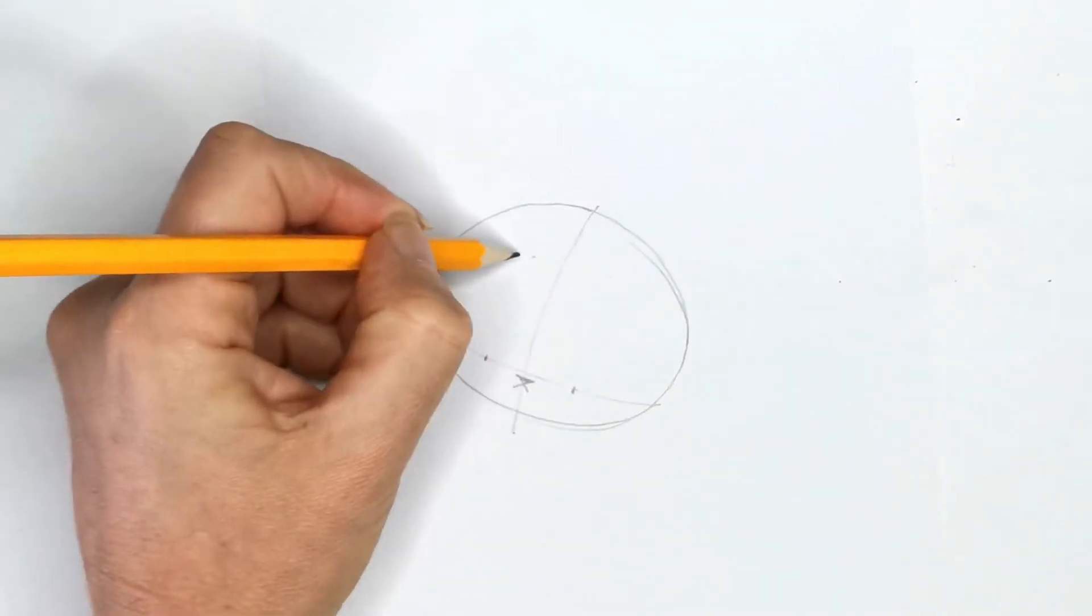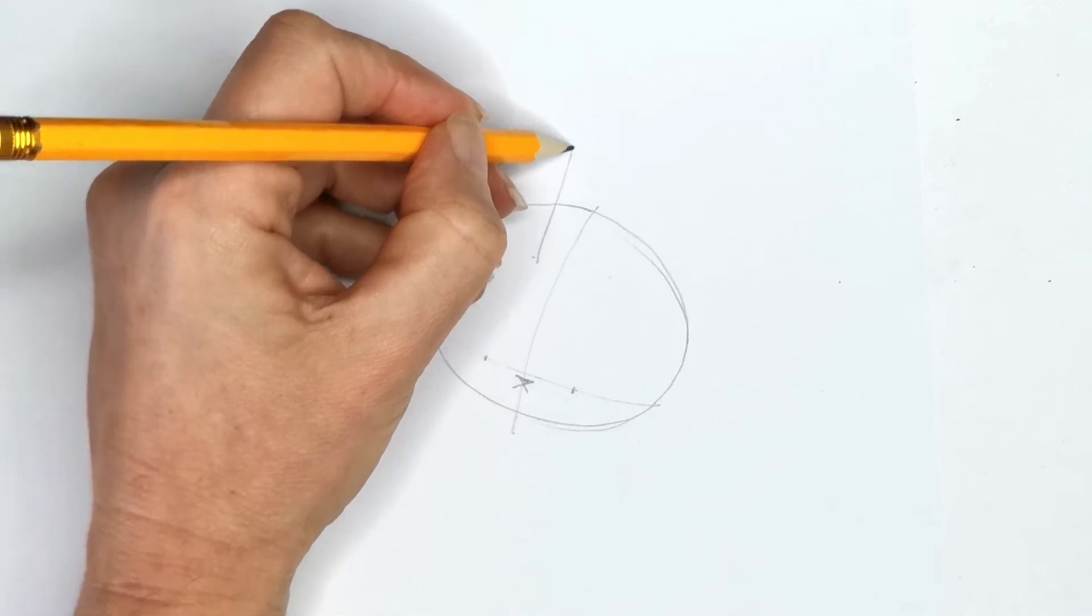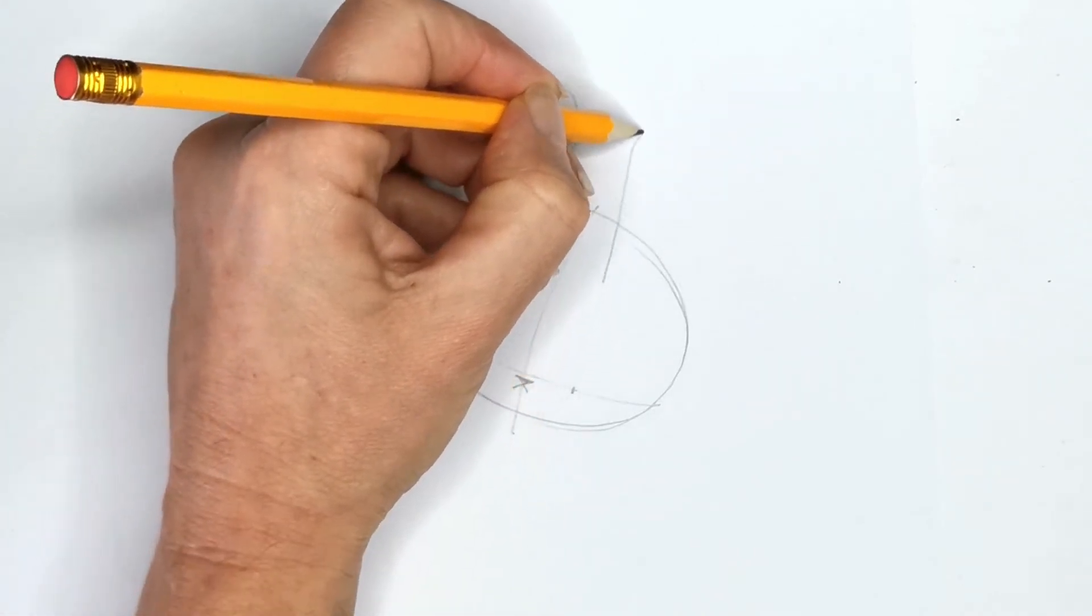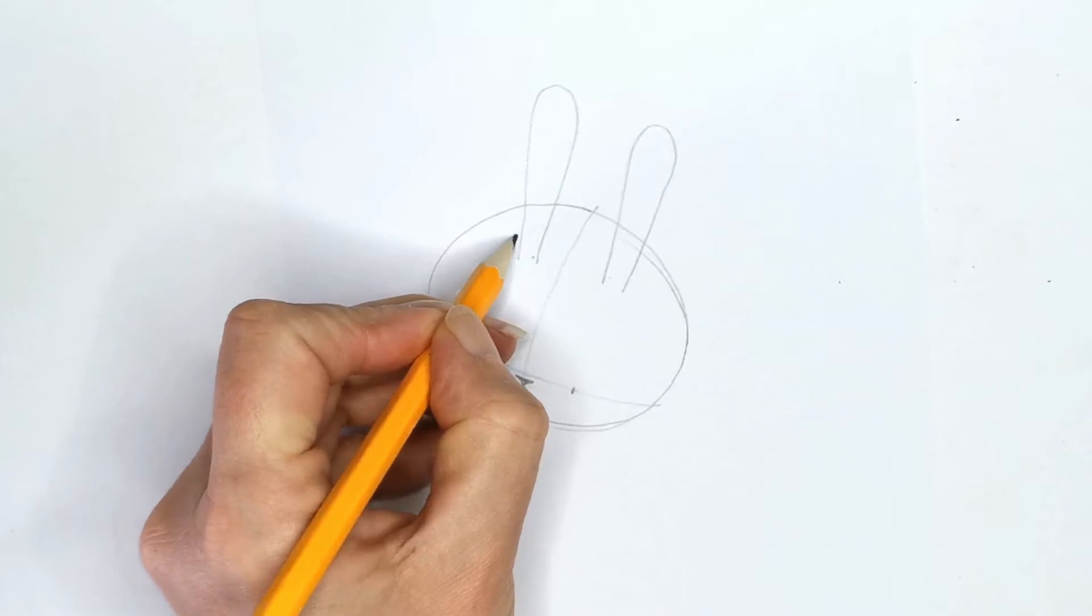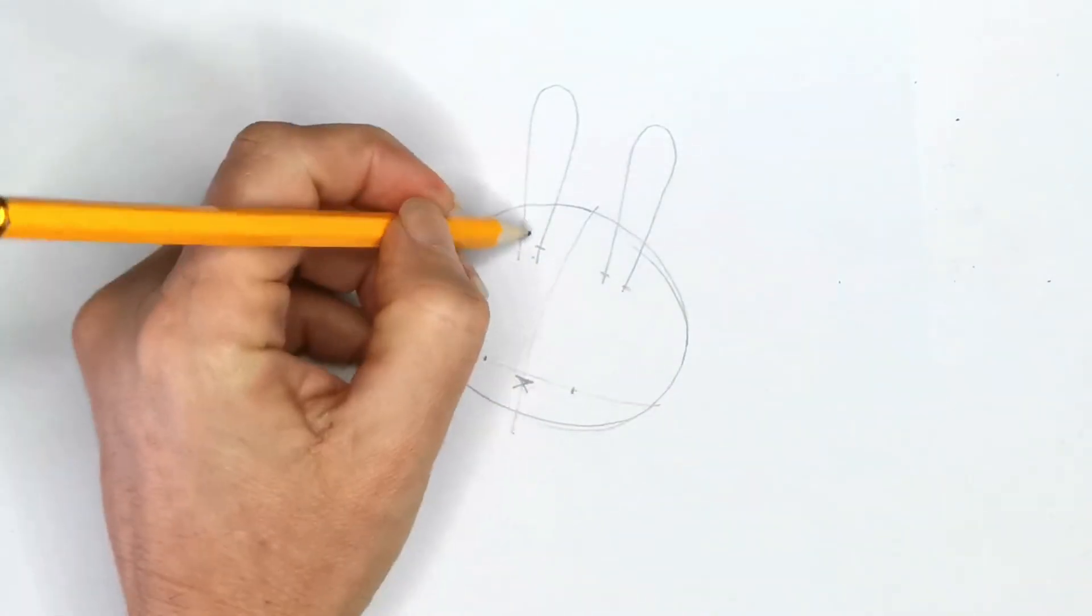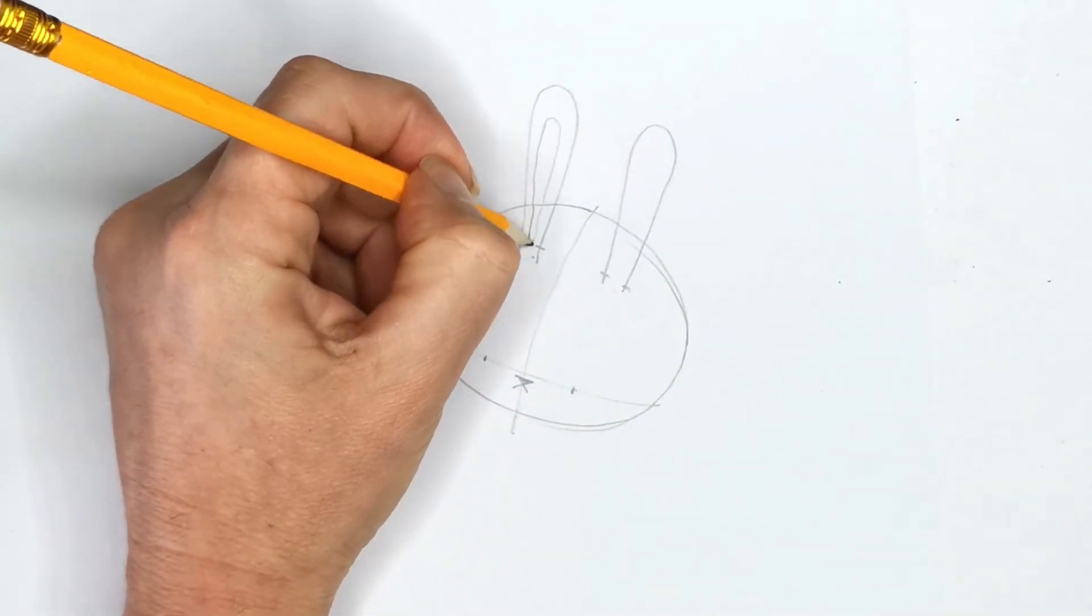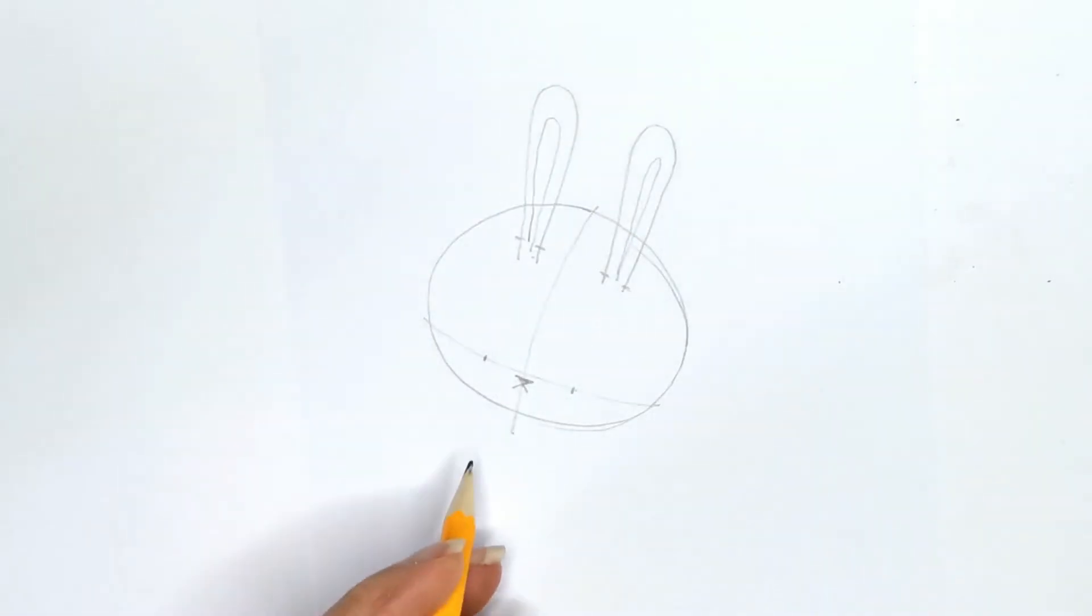The ears come from about here on the head so we're just going to go straight up and do two little ear shapes like this. We may stop those about there like that. We'll see how we go. And the inner ears here, just draw those in.